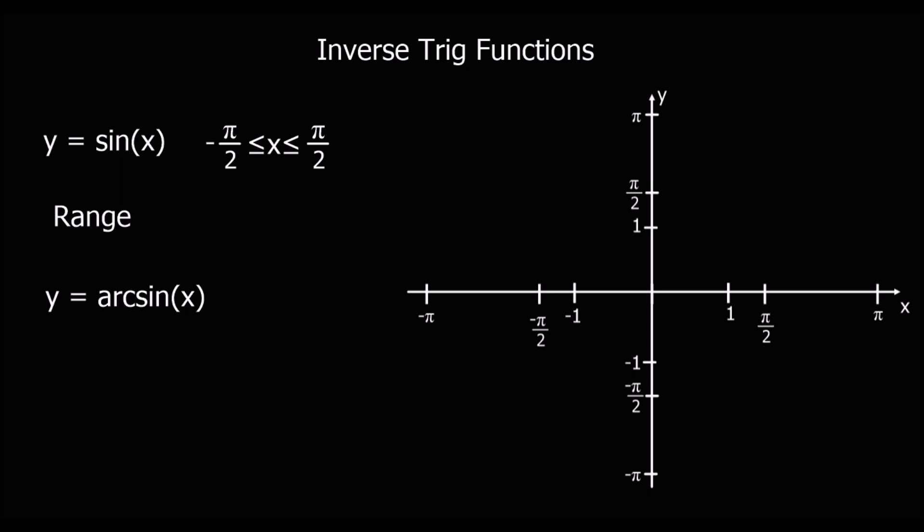Now we're going to look at the graphs of these inverse trig functions. We're going to start with the original y equals sine x, and then draw the inverse of it, y equals arcsine x. For the original, we're limiting the domain to make it a one-to-one function, so we're only going to draw y equals sine x between minus pi over 2 and positive pi over 2.